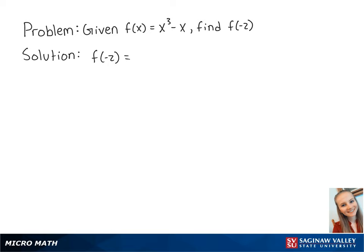So we get negative 2 cubed minus negative 2. This equals negative 8 plus 2, which is equal to negative 6. And this is the final answer.